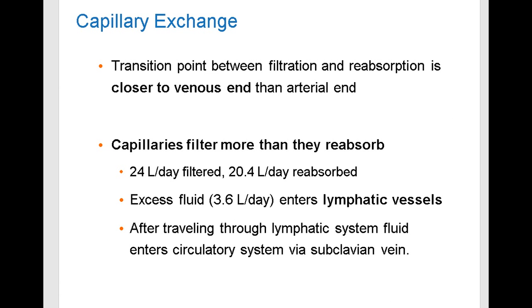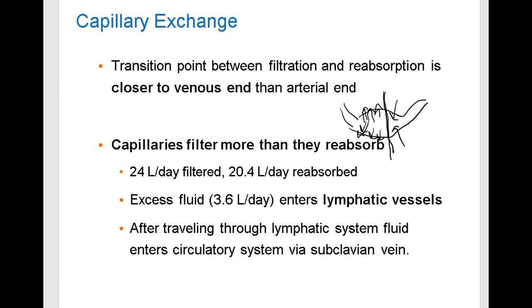The transition from filtration to reabsorption is not at the center of the capillary bed — it's closer to the venous end. This means that more filtration occurs than reabsorption. On average, about 24 liters per day of fluid is filtered out of the bloodstream, and only 20.4 liters per day is reabsorbed. That leaves an extra 3.6 liters of fluid every day lost from the bloodstream and left in the interstitial fluid.